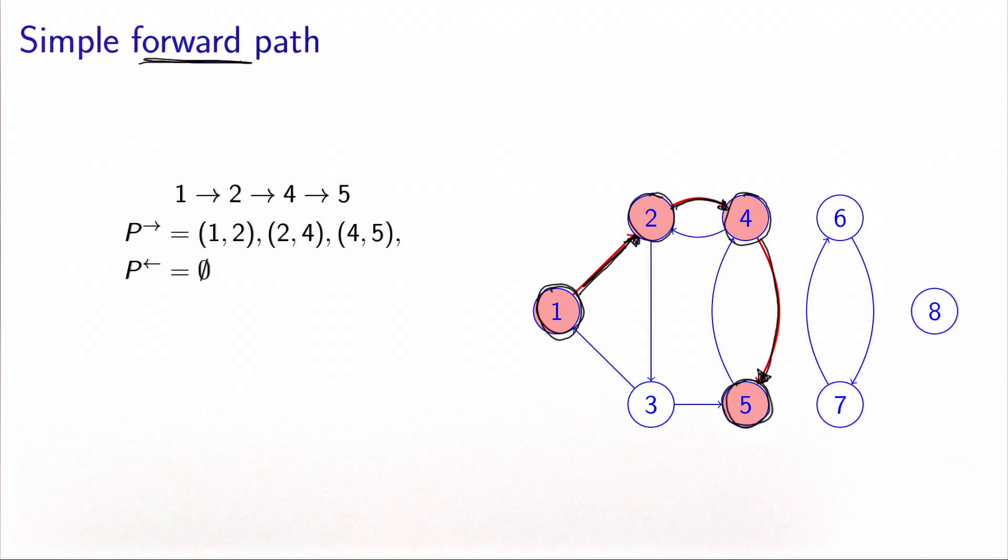Also, as you can see, each node is present only once in the path. This is the definition of a simple path. A simple path is a path such that each node is visited only once.